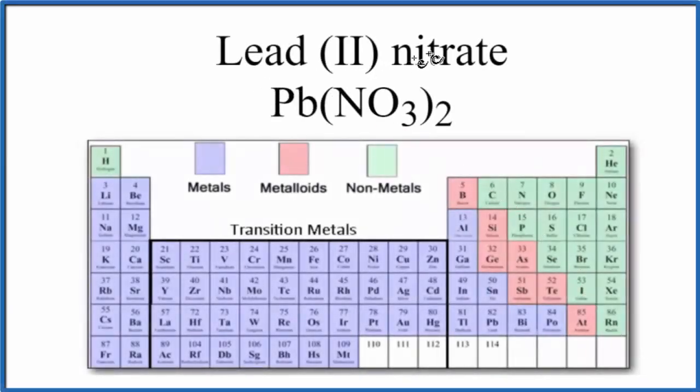In this video, we'll look at whether lead (II) nitrate, Pb(NO3)2, is ionic or covalent.